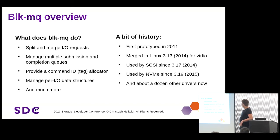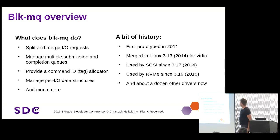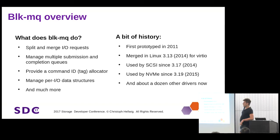Later we converted the SCSI layer to optionally use block MQ, which helped with performance on things like SRP or high-end RAID adapters. Then in 3.19 we converted NVMe over. By now we've got another 10, 12, or maybe 15 drivers using it. The latest I saw converted just two days ago was the IBM S390 DASD driver — so even mainframe technology from the 70s is now using our best and fastest infrastructure.